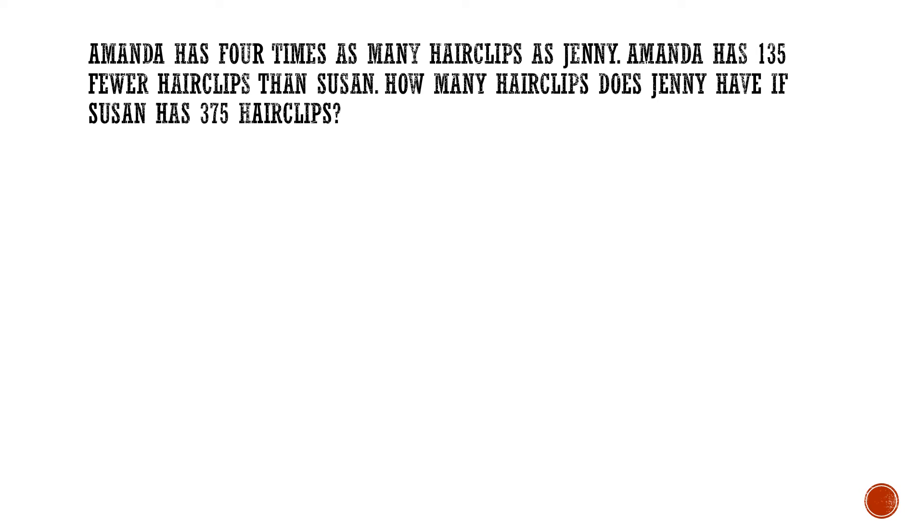Let's move on. Amanda has 4 times as many hair clips as Jenny. Amanda has 135 fewer hair clips than Susan. How many hair clips does Jenny have if Susan has 375 hair clips? There are 3 variables here. There's Amanda, there's Jenny, and there's Susan. So how do you do this? You have to draw one at a time. So first, the easiest one is Amanda and Jenny. Amanda has 4 times as many. So Amanda, I draw in the center, and you'll see why later. Amanda has 4 times as many hair clips as Jenny. Amanda, Jenny. You have to now label 1 unit each.